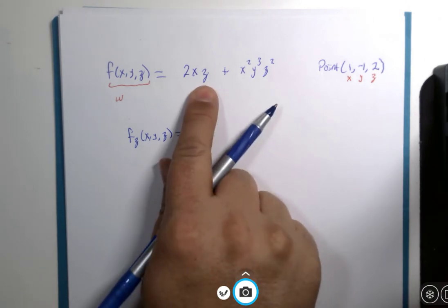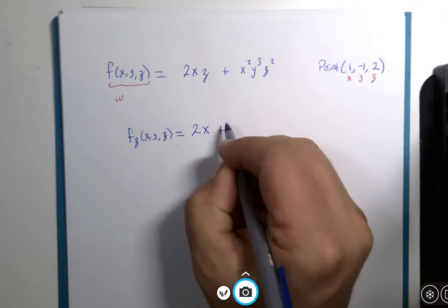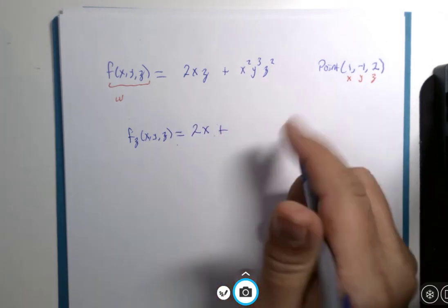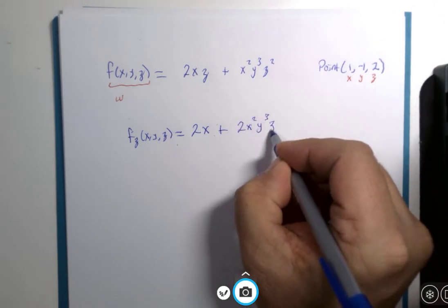If z is the variable, the derivative of z is 1, leaving you just the constant 2x. If z is the variable here, you get 2 multiplied by x squared, y cubed, z to the first.